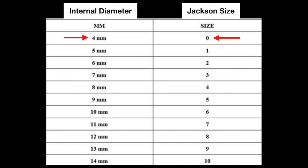For example, a size 0 correlates with a 4 mm internal diameter of the tracheostomy tube. A size 1 correlates with a 5 mm internal diameter. As the size increases, so does the internal diameter of the tracheostomy tube. The largest size is a size 10, which has an internal diameter of 14 mm.